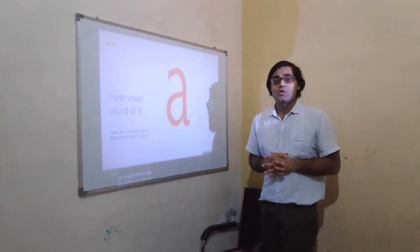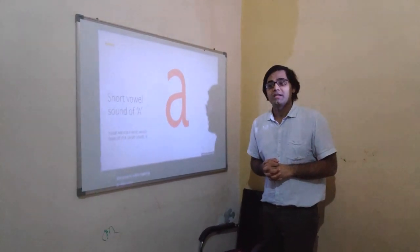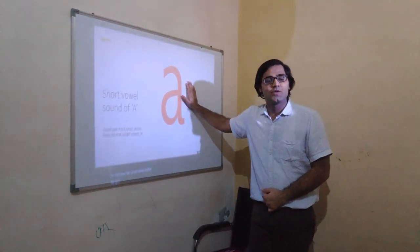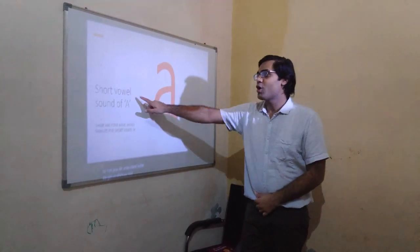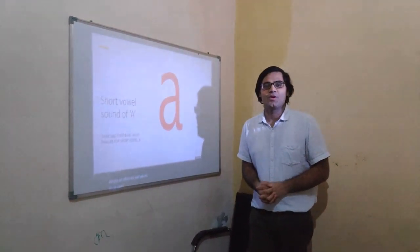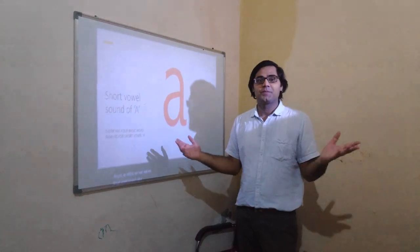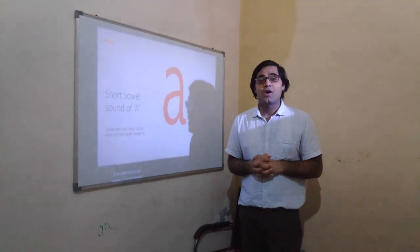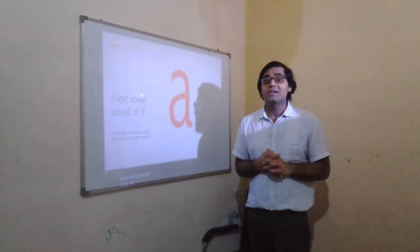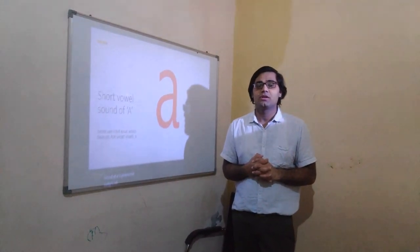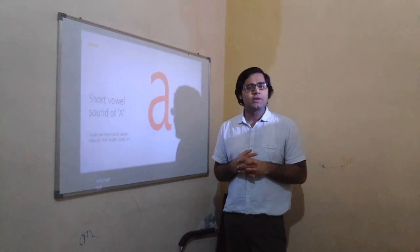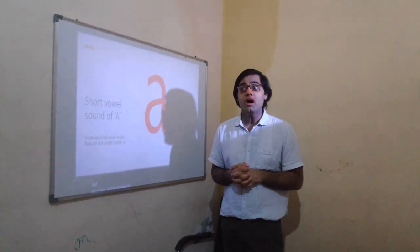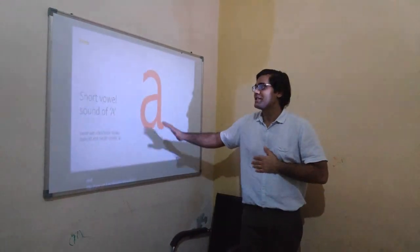Alright, so the lesson is on the short vowel sound of 'a'. The short vowel sound of 'a' is pronounced as /æ/, as in words like cat, hat, Matt. If you observe, children, I'm pronouncing the word as 'a' — not 'a' (long). Let's see the slide on this board: short vowel sound of 'a'.